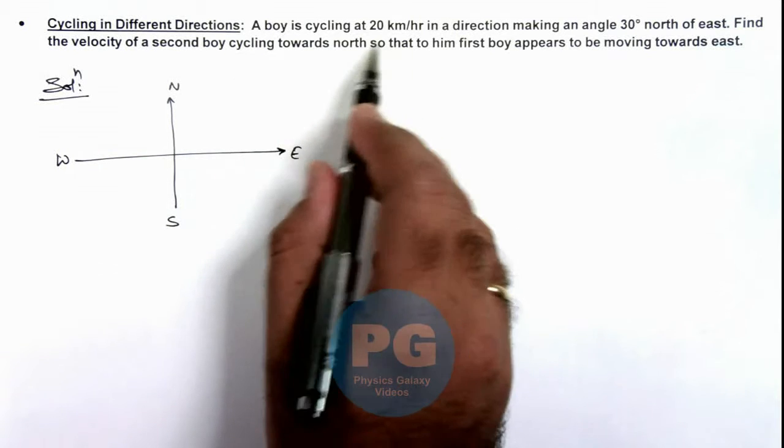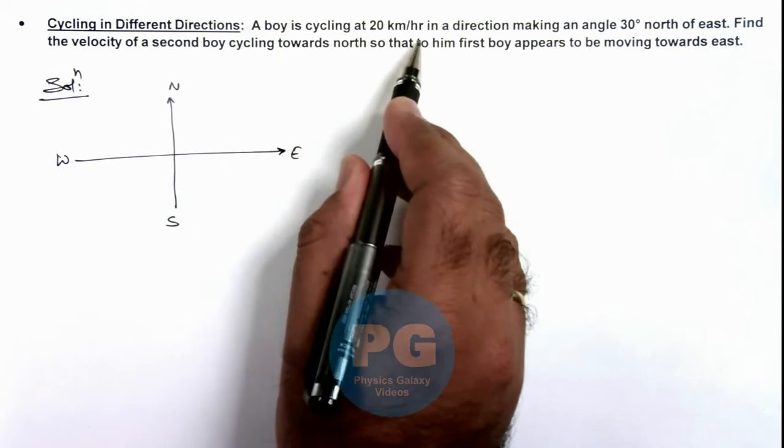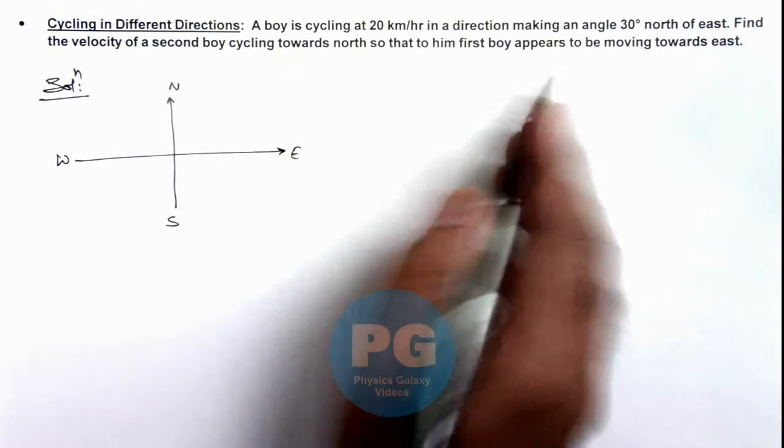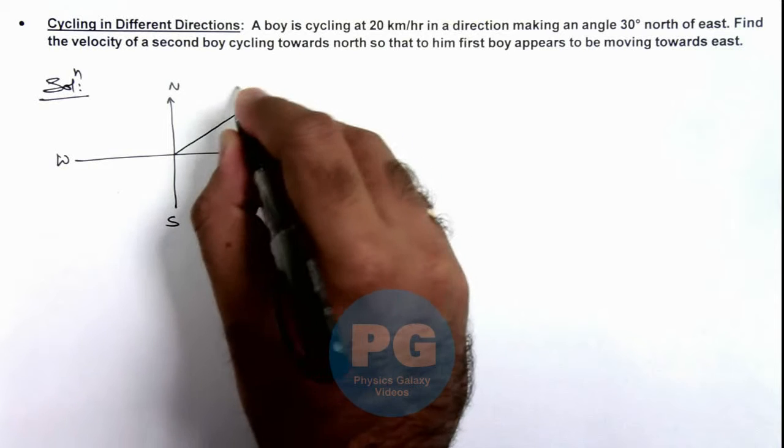The first boy is given that he is cycling at 20 kilometers per hour in a direction at an angle 30 degrees north of east. So this is the direction of the first boy.